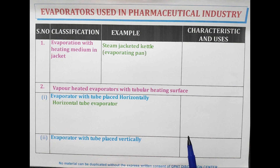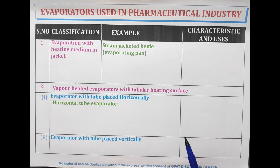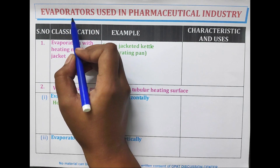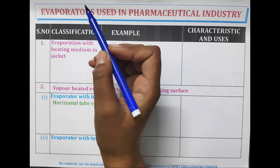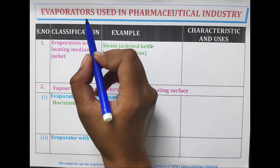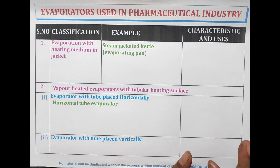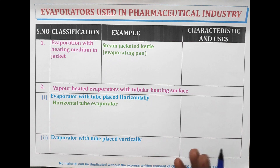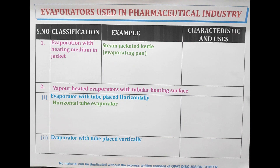Hello pharma aspirants, welcome or welcome back to GDC channel. In this video we are going to discuss about evaporators which are used in pharmaceutical industries. Evaporation is a process of vaporizing a large quantity of volatile liquid to get a concentrated product, and for this process evaporators are used.